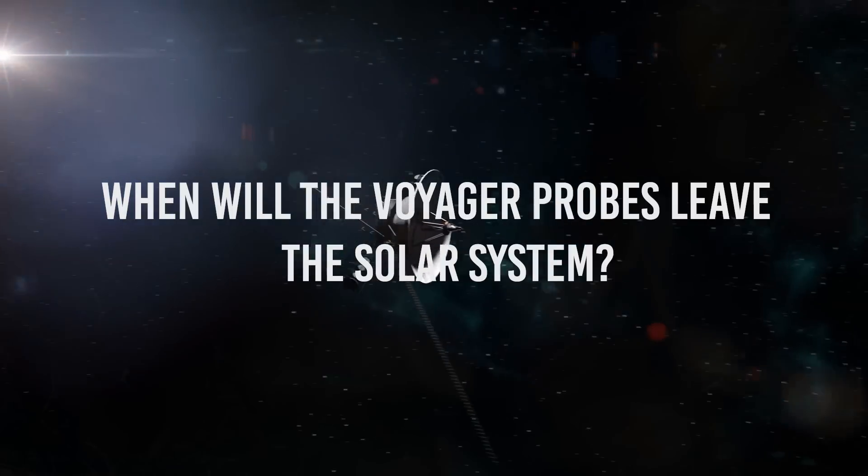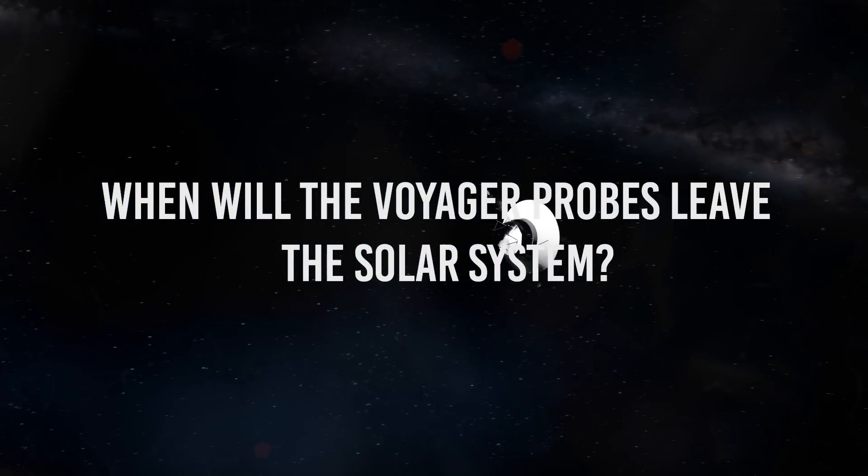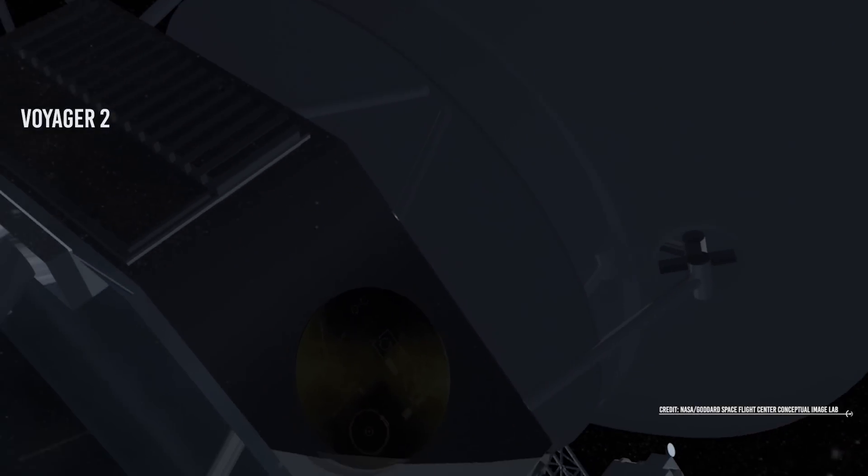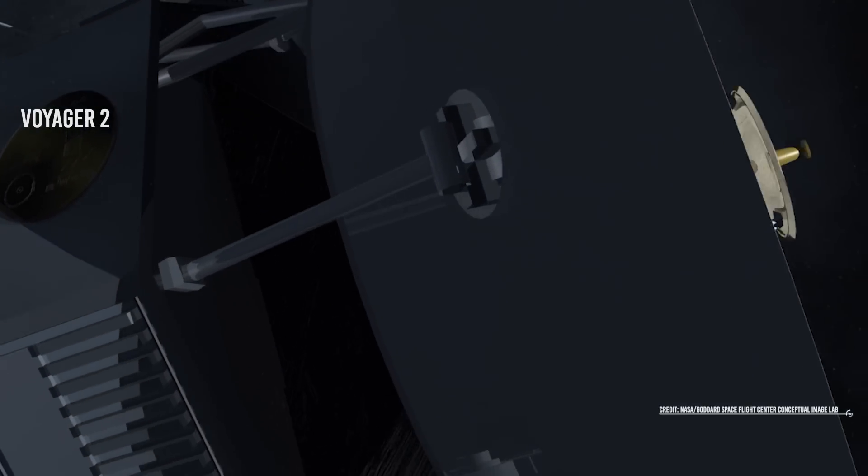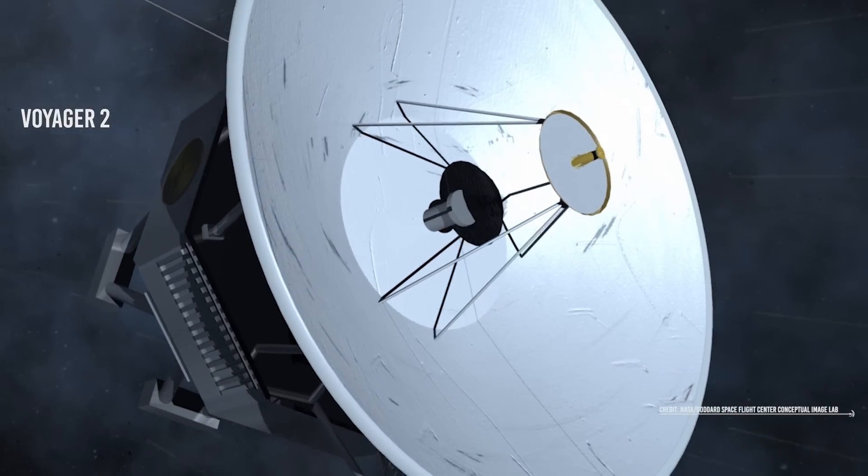When will the Voyager probes leave the solar system? On November 5th, 2018, NASA announced that the Voyager 2 space exploration probe had left the heliopause. This area marks the limit of the solar system.